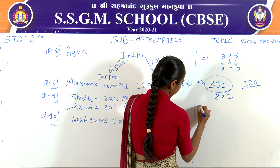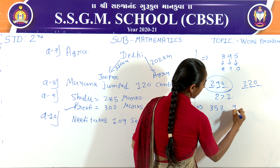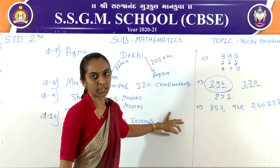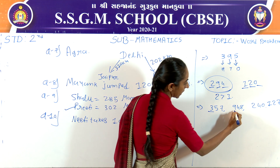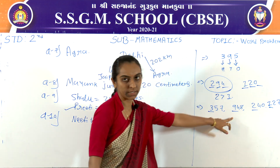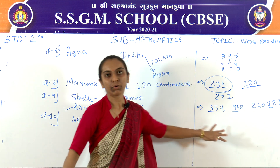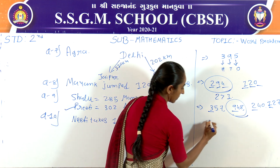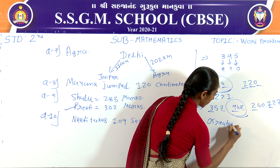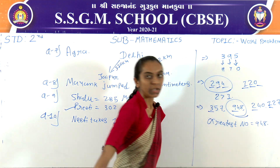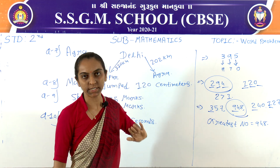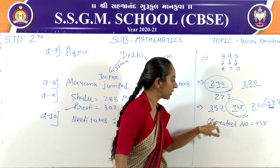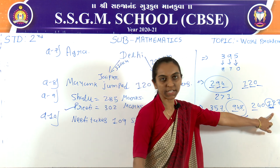Let us see another example: 357, 948, 240 and 127. Look at the first digit: 3, 9, 2 and 1. You know that 9 is greater than 3, 2 and 1, so 948 is the greatest number. For the least number, that means the smallest number — 1 is the smallest among 2, 3 and 9, so the smallest number is 127.